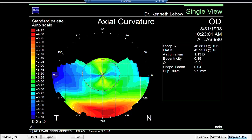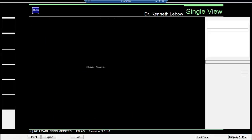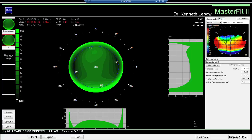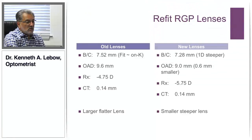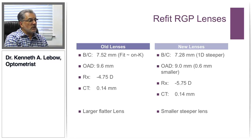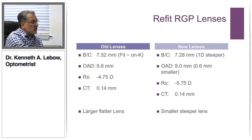Looking at the MasterFit suggestion and the elevation map, what's being recommended is a custom spherical lens with a 7.28 base curve and 9.0 diameter — and actually this looks like a pretty nice fitting contact lens. When I selected the contact lens to fit the patient, I actually used a 7.28 diameter 9.0 lens — significantly steeper than the original 7.52 contact lens. But the lens is smaller, so we really don't see a whole lot of bearing even though we are going quite a bit steeper.